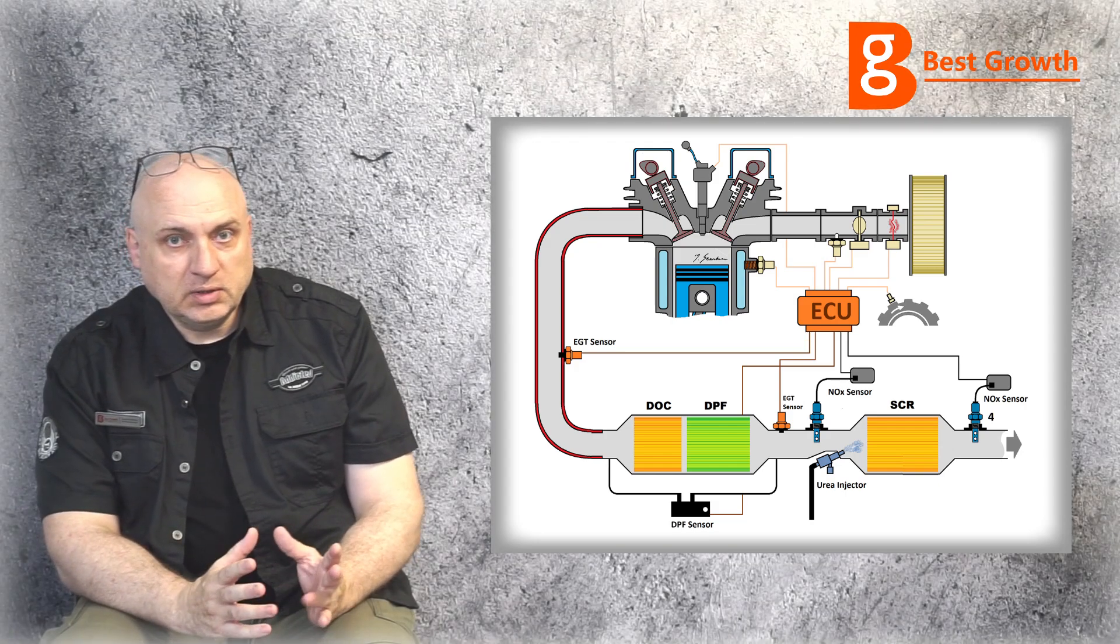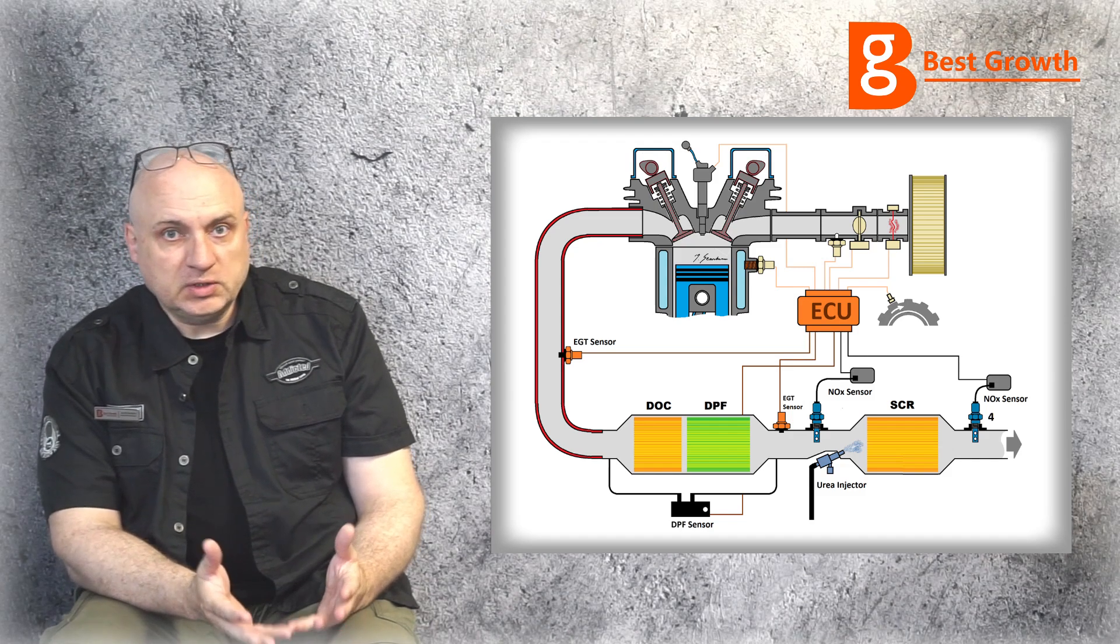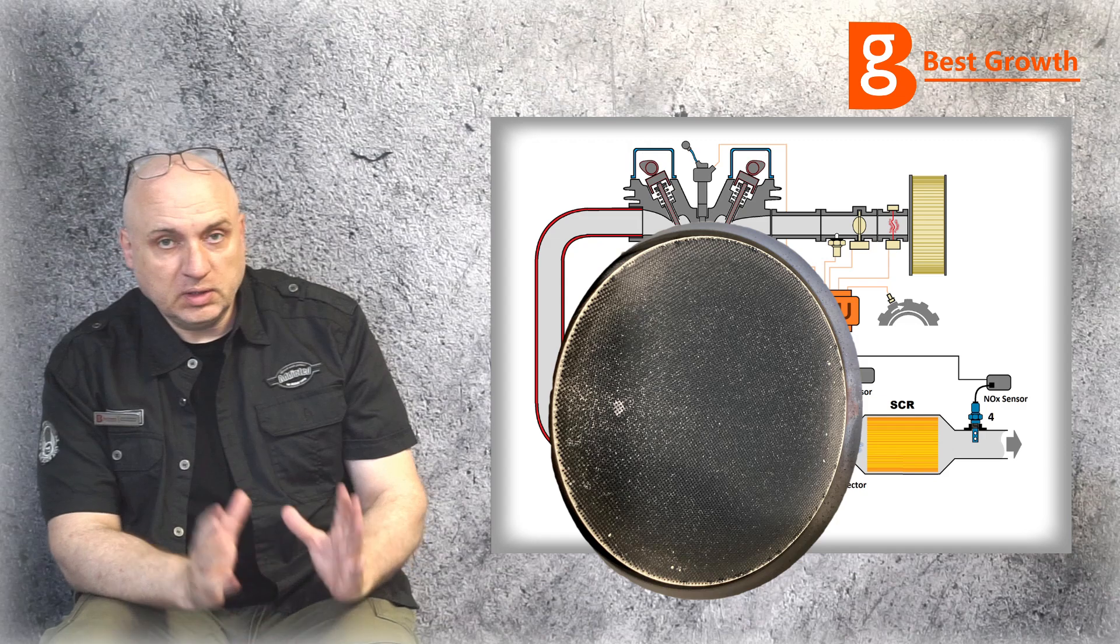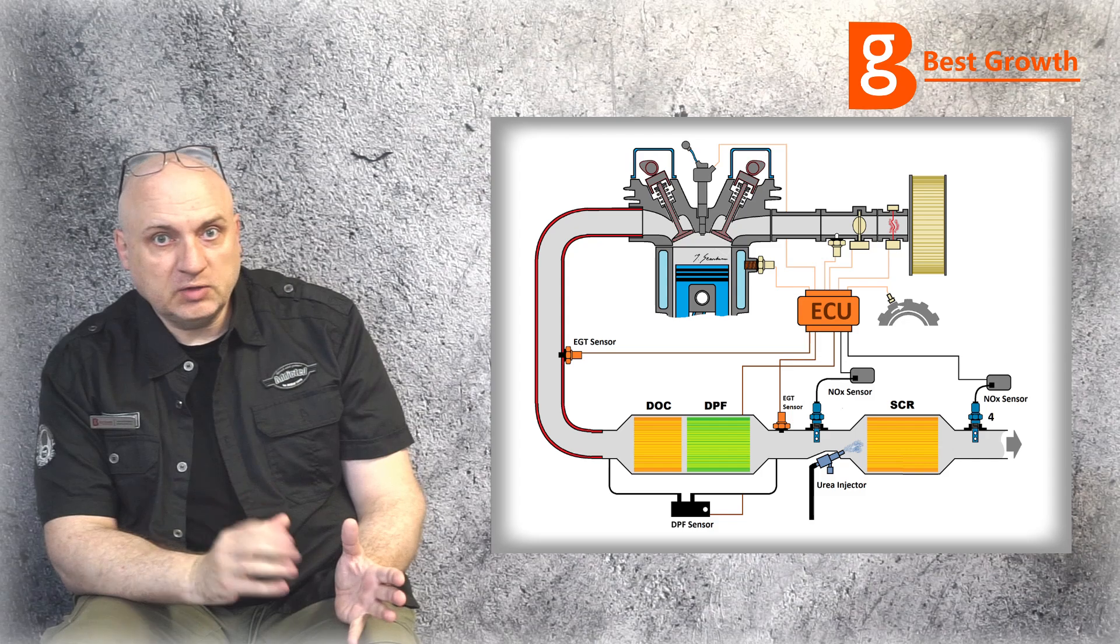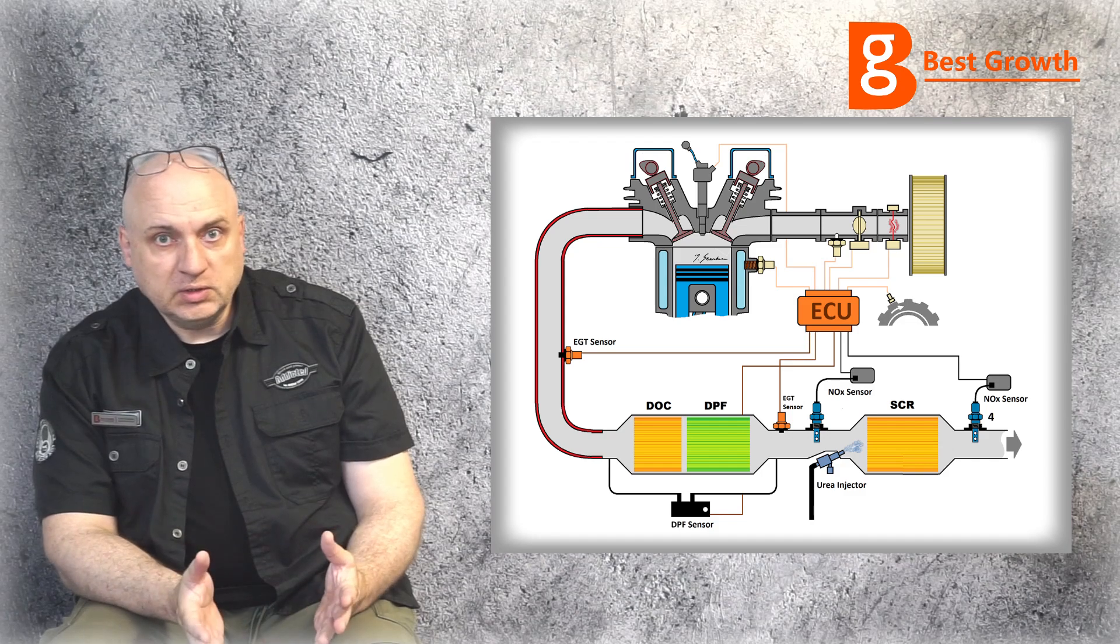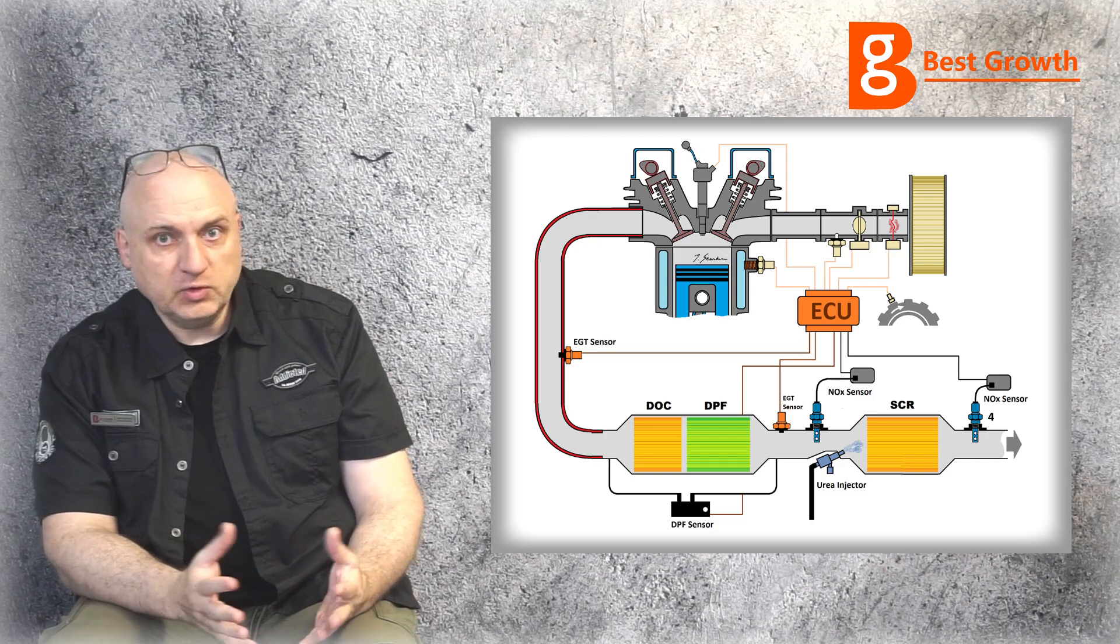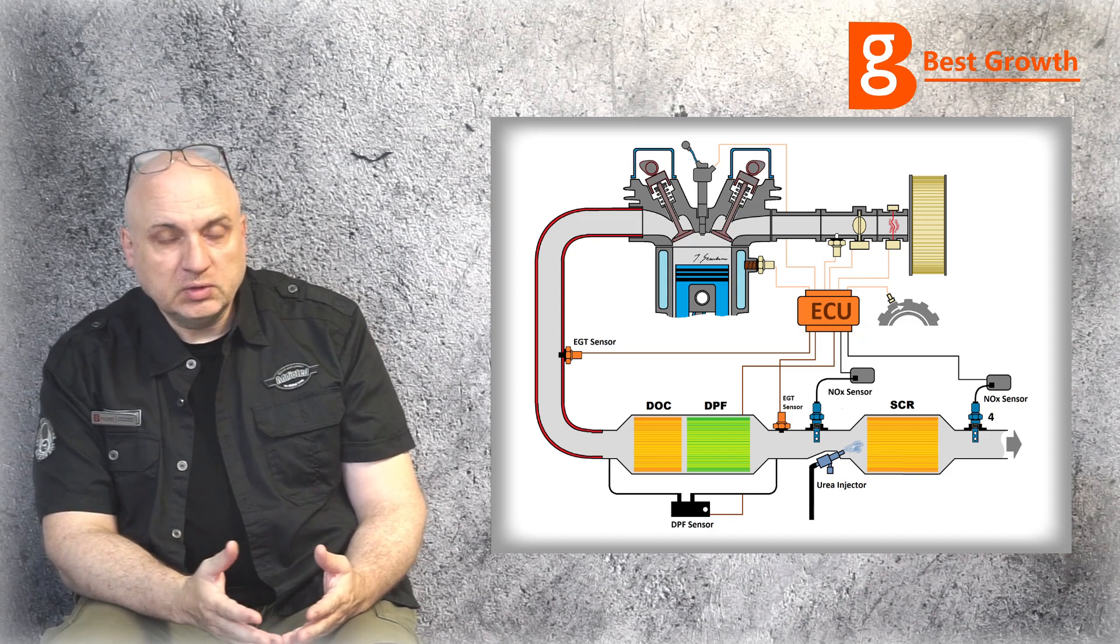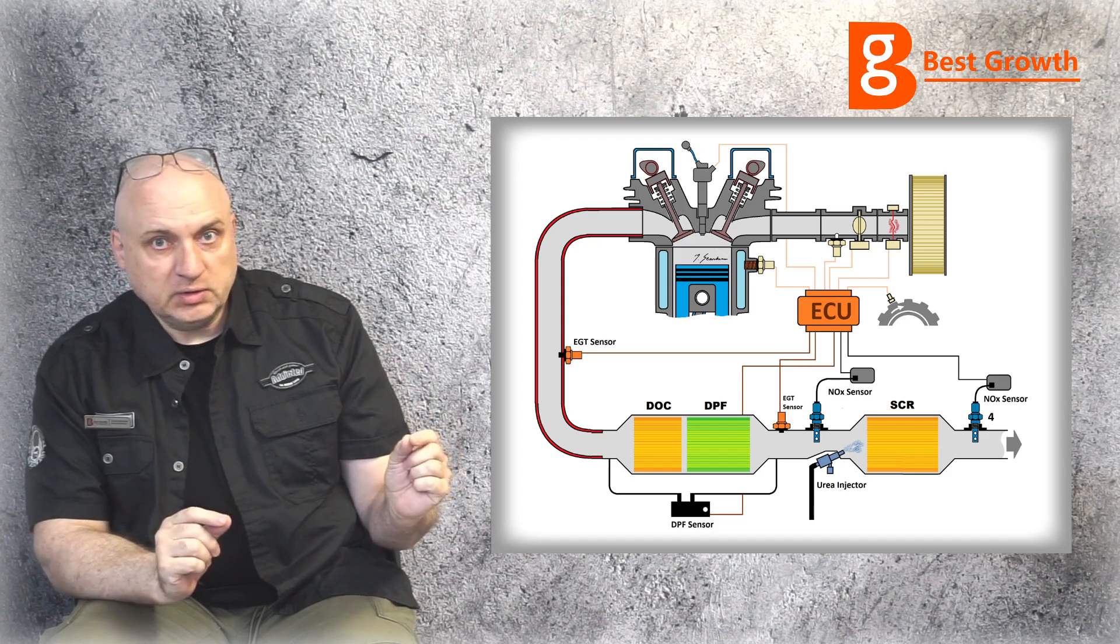This system requires certain maintenance. For example, the DPF filter can be full after a couple of hours of full load engine work. By the way, the volume of the DPF filter is 1.5 to 2.5 times bigger than the engine capacity. The filter is considered to be full when it exceeds 45% of its volume. The ECU knows when the DPF is full because it measures the pressure before and after DPF filter.